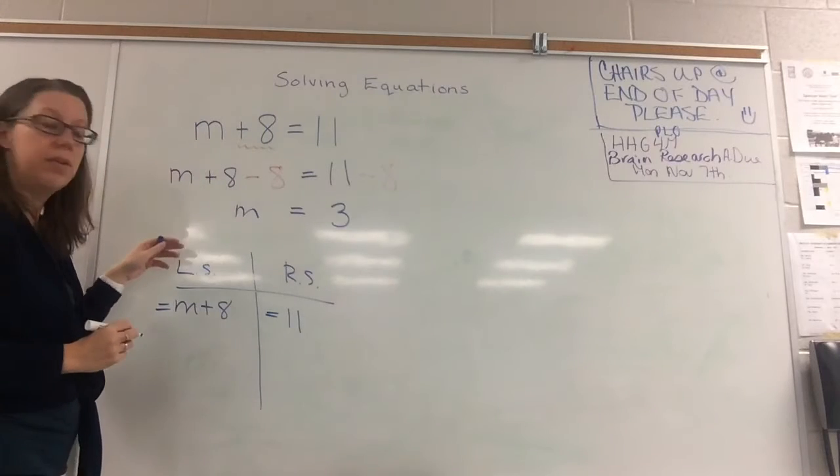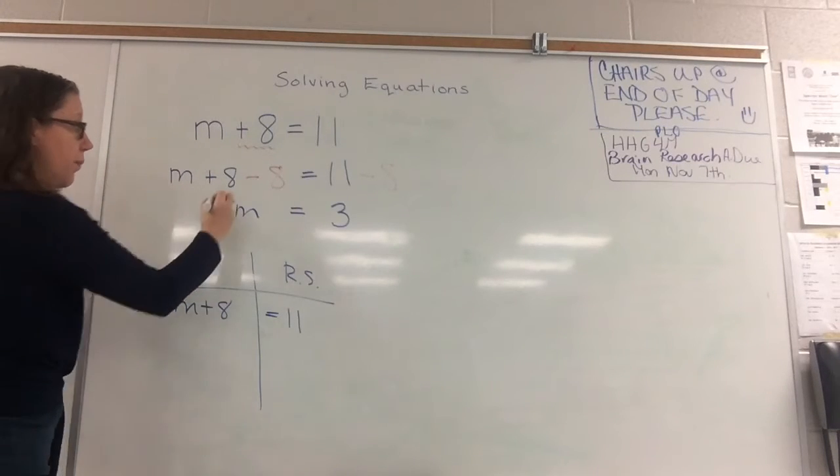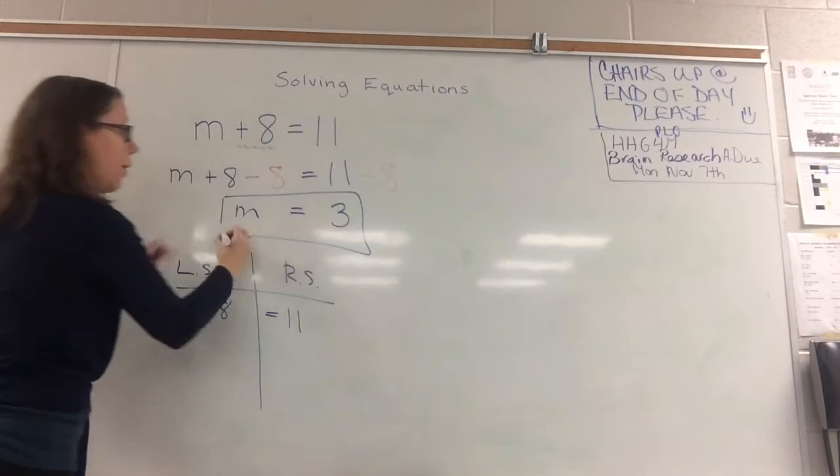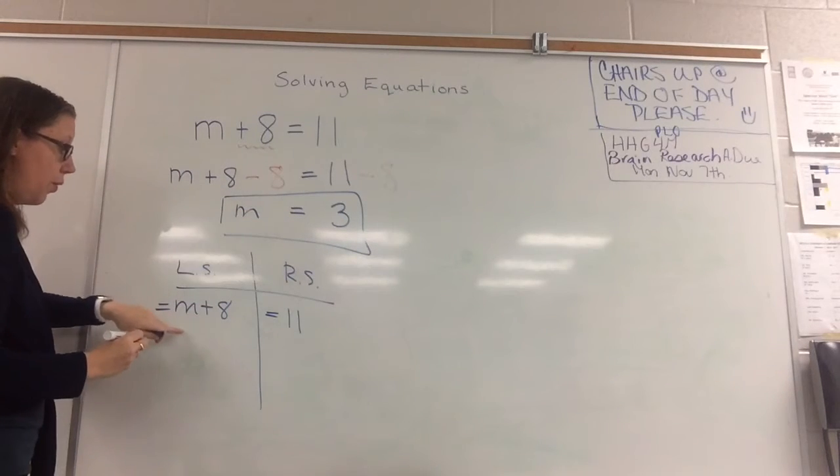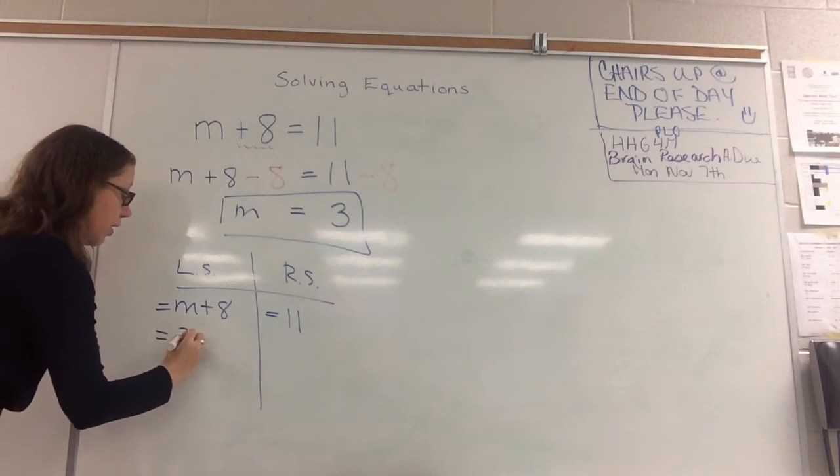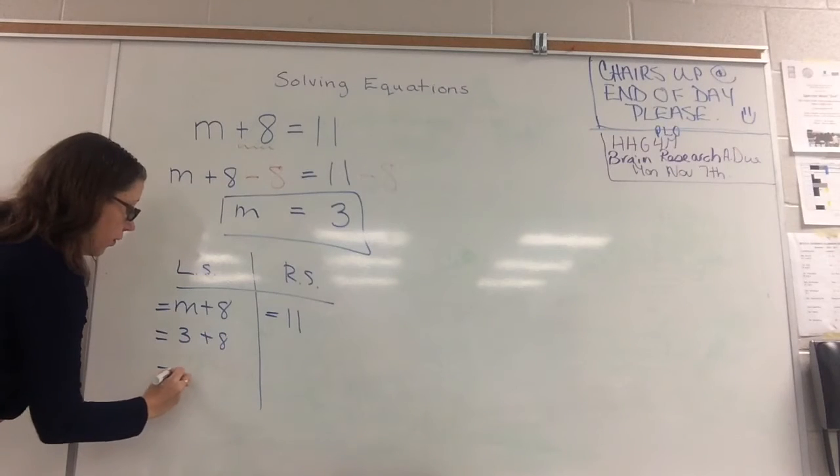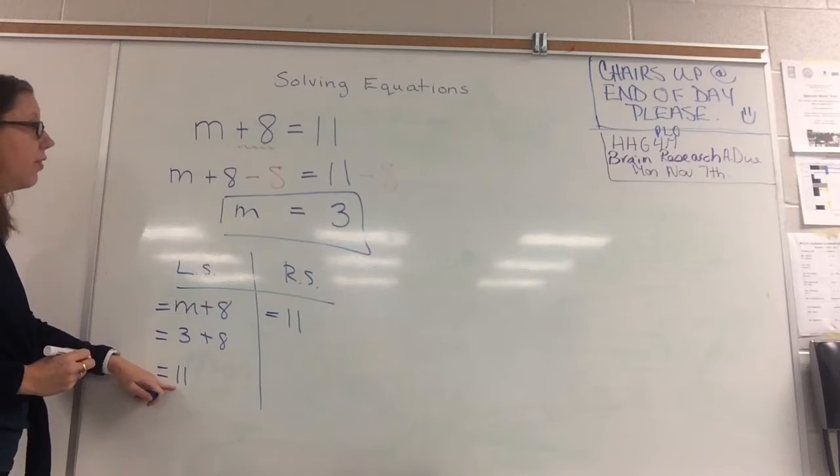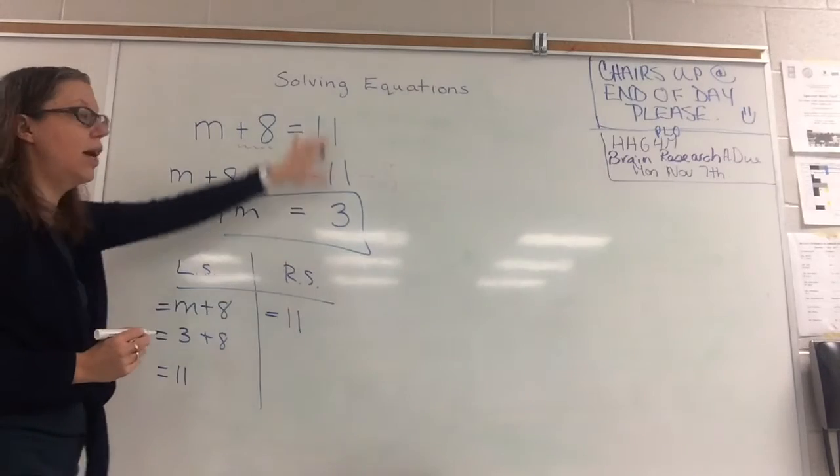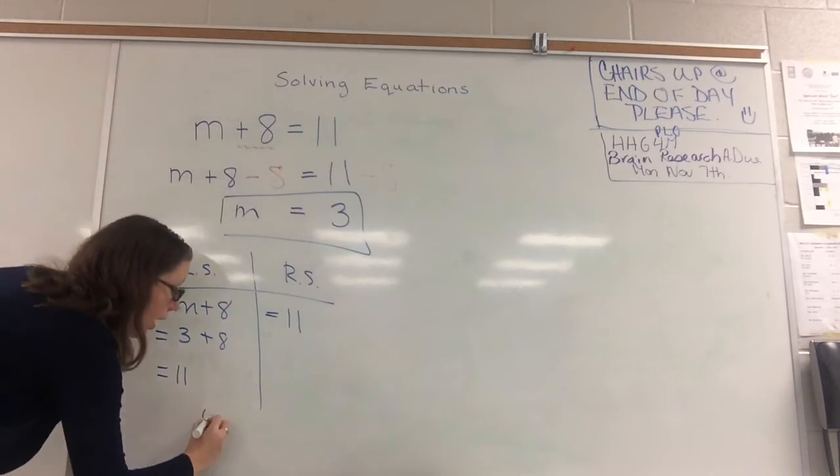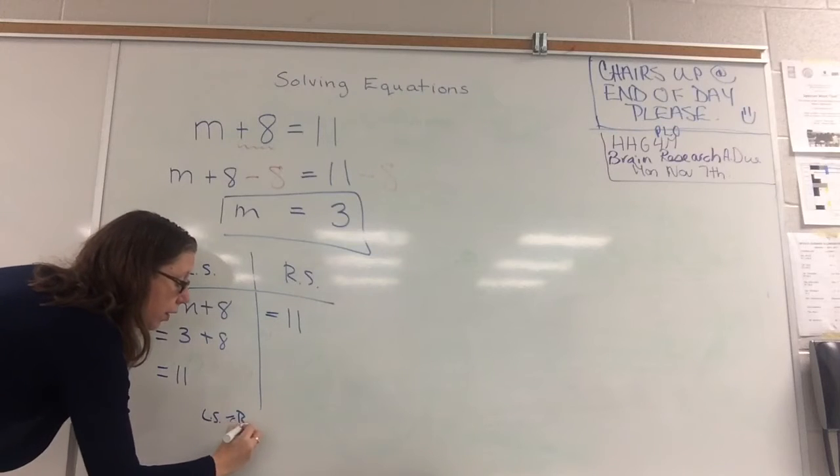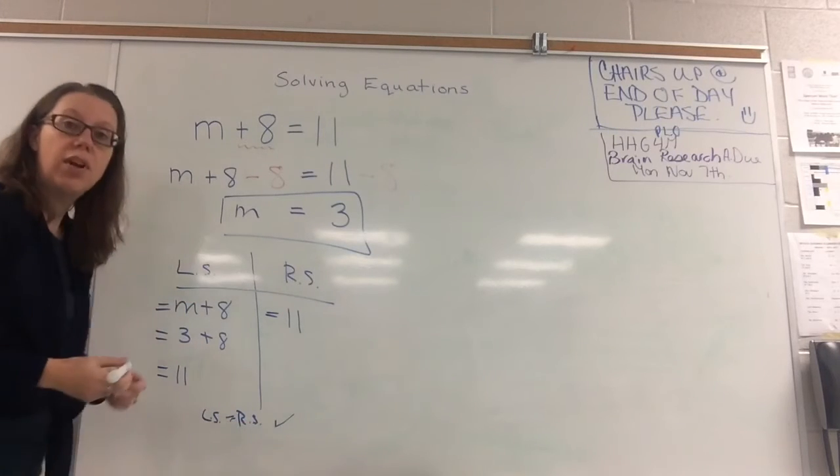And I substitute in with the value that I found for m. So I had figured out that m equals 3. I'm going to put 3 in down here to check. 3 plus 8 equals 11. So my left side equals 11, my right side equals 11. And if that works out, I know I've done it correctly.